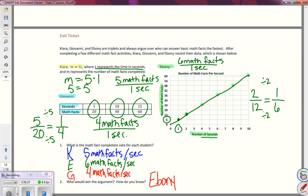How do we know? Ebony can solve six math facts per second. She solves more per second than both of her sisters.